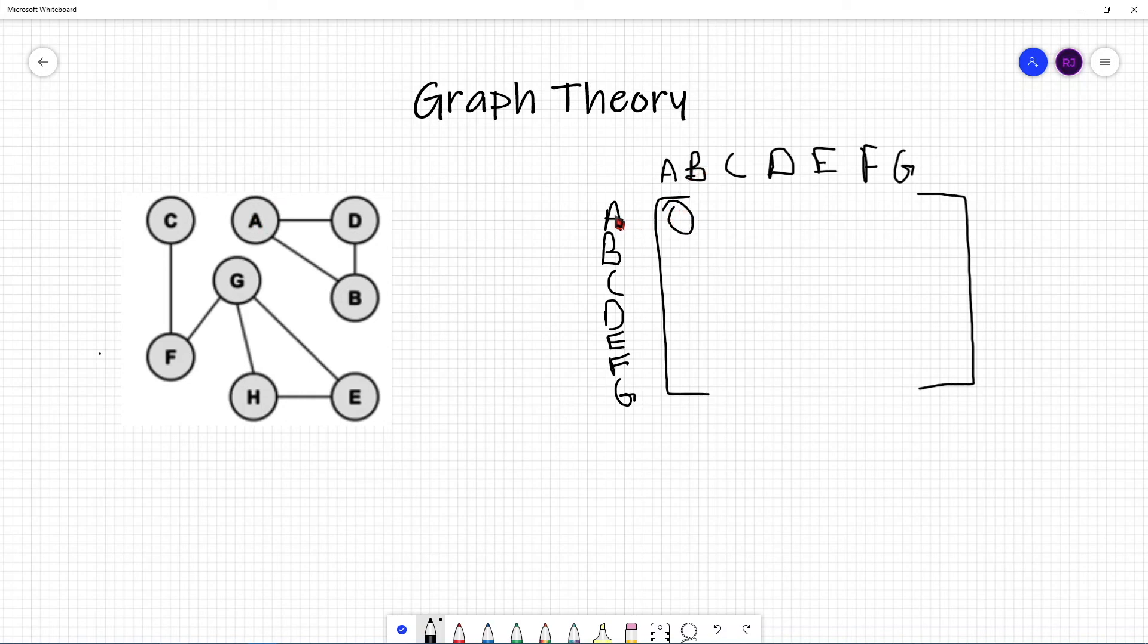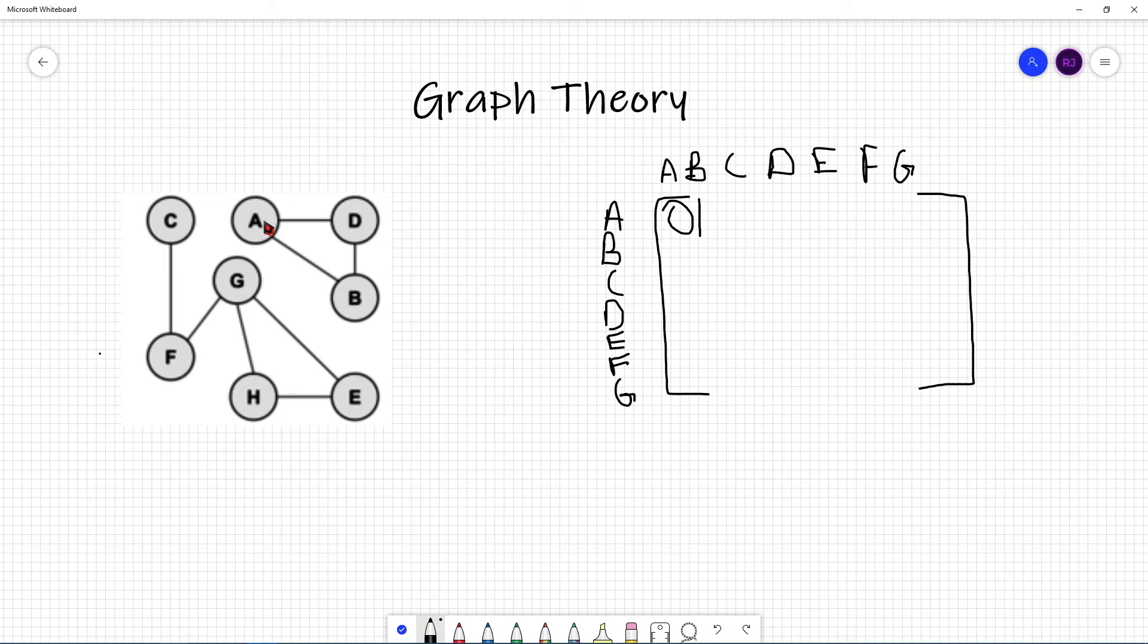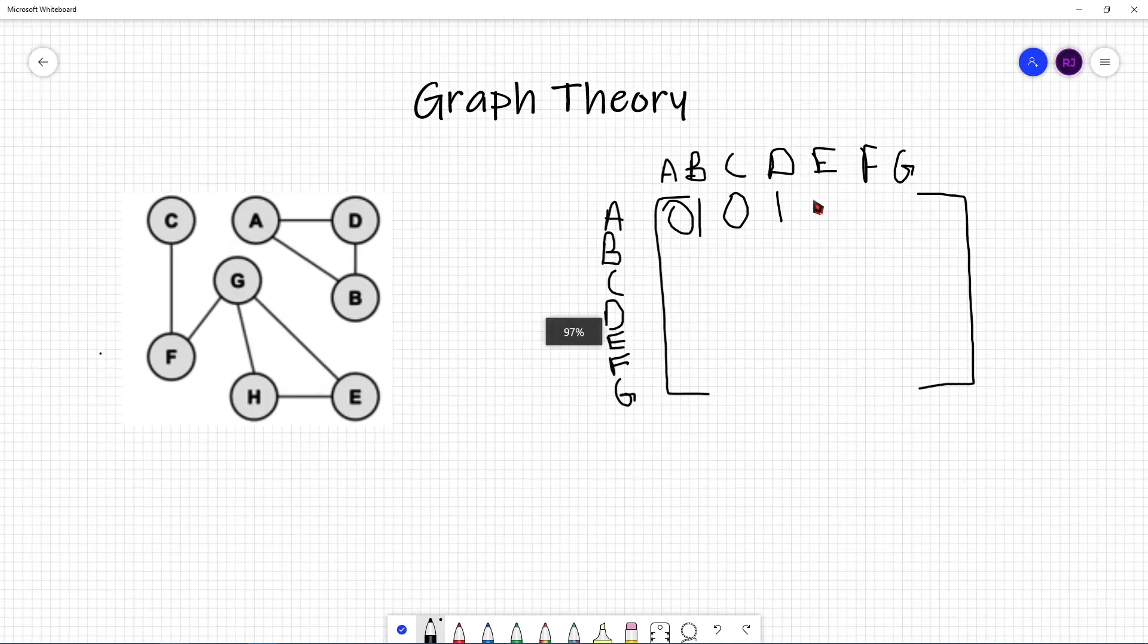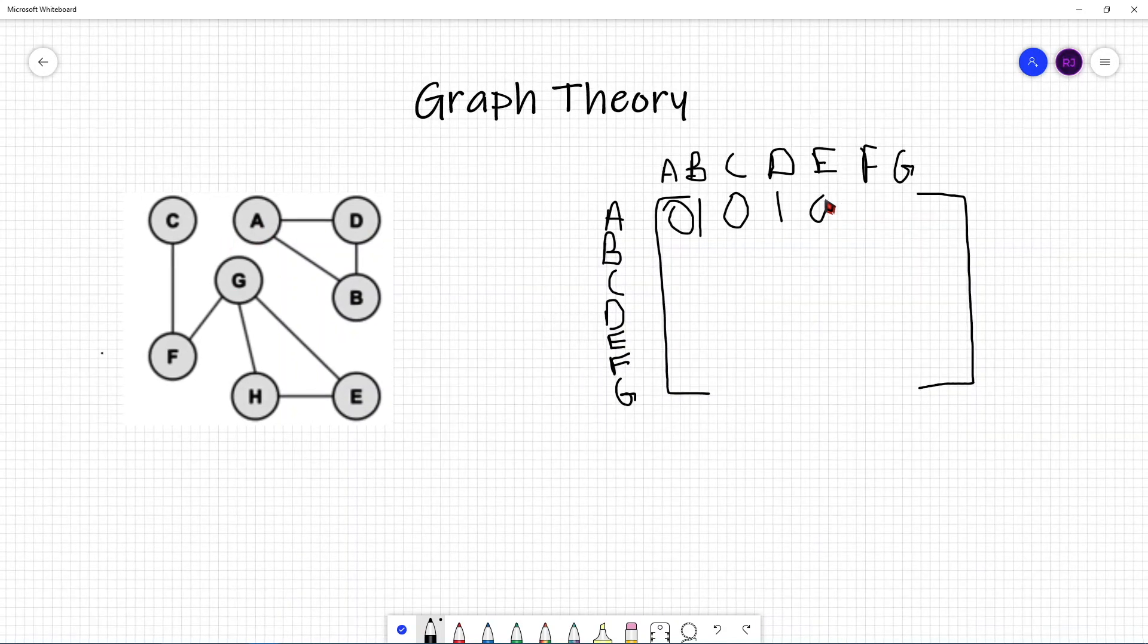Now, let's look at this. Is there an edge from A to B? Well, there is. So, then you fill it with one. Is there an edge from A to C? No, there isn't. So, that's a zero. Is there an edge from A to D? Yes, there is. And then there's none from E, F, and G. So, zero, zero, and zero.